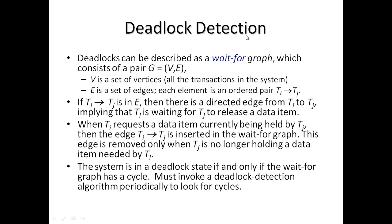Deadlock can be detected using graph theory. Suppose there are two transactions Ti and Tj; deadlock can be described using a wait-for graph. A wait-for graph consists of a pair G = (V, E), where V is the set of vertices — representing all transactions in the system — and E is the set of edges. Each element is an ordered pair Ti → Tj, where Tj holds a data item and Ti is requesting it.